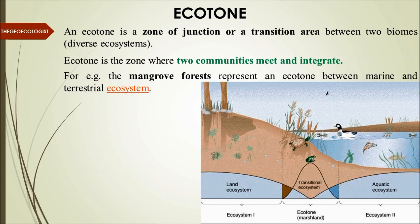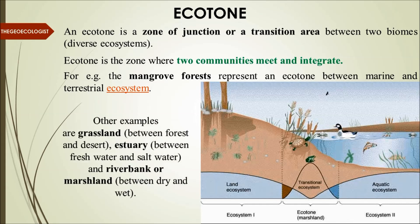Sundarbans in India is a mangrove forest — the two different communities there are the river community (the Ganges) and the Bay of Bengal. Other examples include grassland as an ecotone between forest and desert, or between forest and agricultural land. Estuary is between freshwater and saltwater. Riverbank or marshland is between dry and wet. These are all in-between situations, not fixed boundaries.